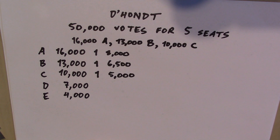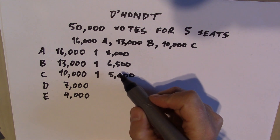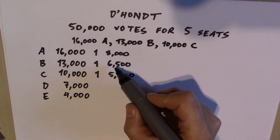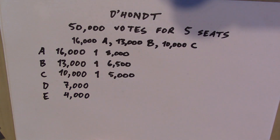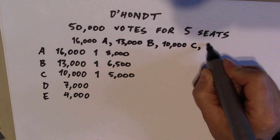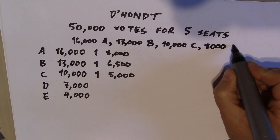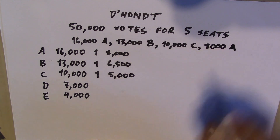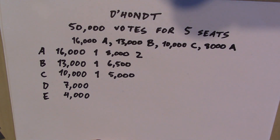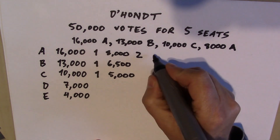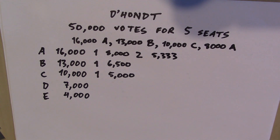What is the next number below 10,000 that would change the number of seats being awarded? It could be 8,000, 6,500, 5,000, 7,000, or 4,000. The highest of those is 8,000, so we reduce the price to 8,000. Party A gets a second seat and now has 2 seats. The price needed for a third seat would be 5,333. We've awarded 4 seats; we have to award one more.